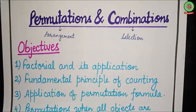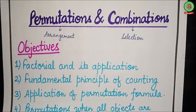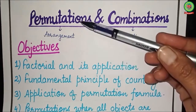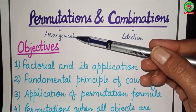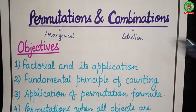Hello students, welcome to the math class. Today we are going to start the chapter on Permutation and Combination. This chapter is mainly related to the arrangement and selection of objects. Permutation means arrangement and combination means selection of objects.